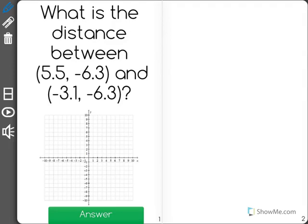Let's start by plotting both of these. 5.5, negative 6.3, I'll find myself right here, and negative 3.1, negative 6.3, find myself right around there.